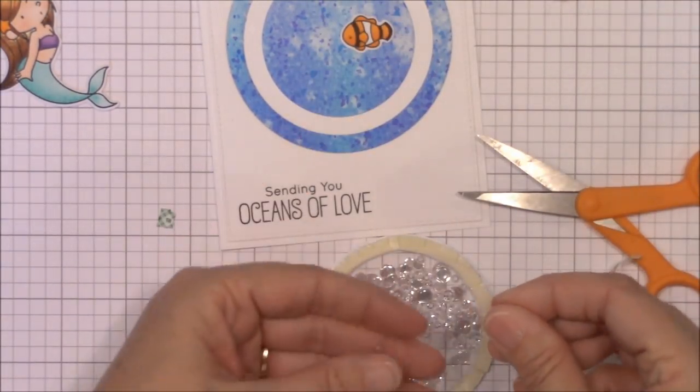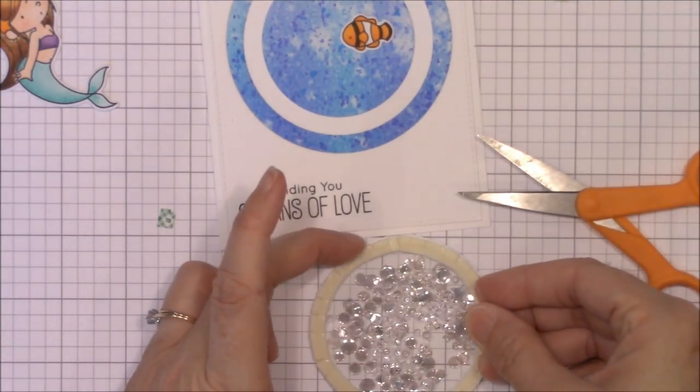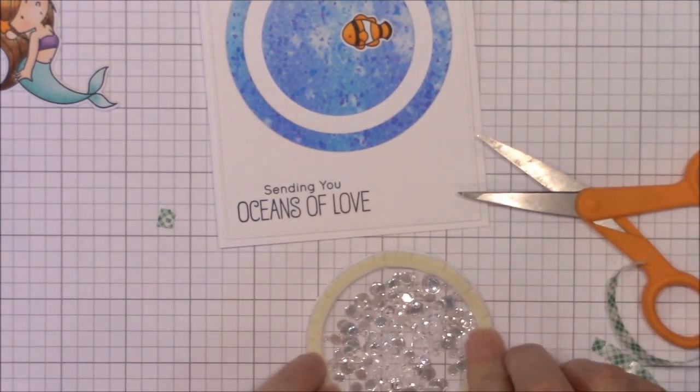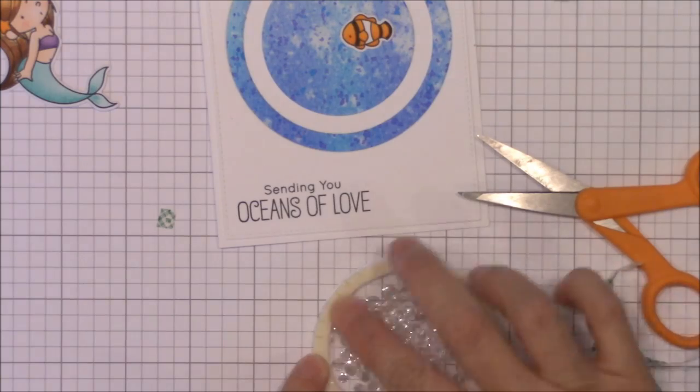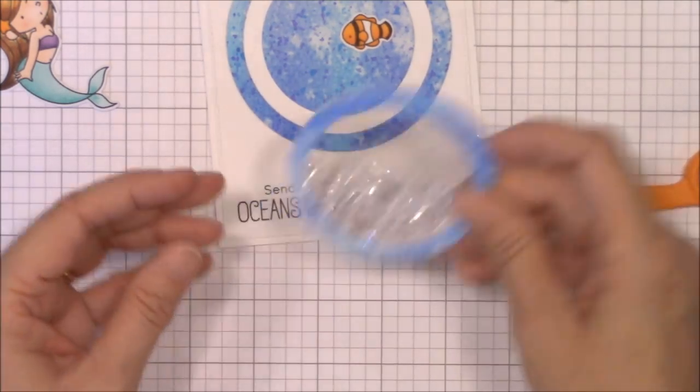Here's another quick tip. If your sequins are super staticky, rub a dryer sheet over the acetate before adhering it to the shaker pocket. This should help keep those little suckers from escaping.